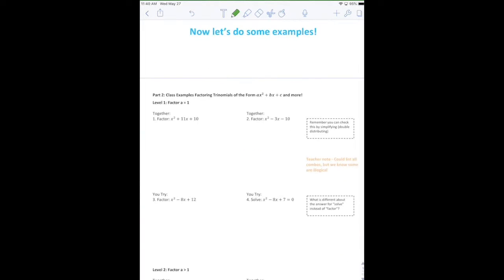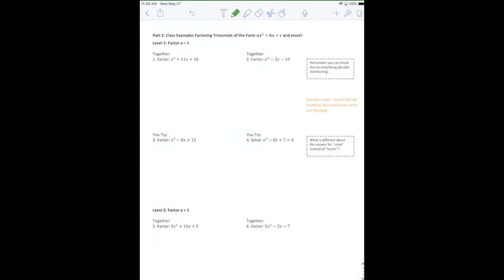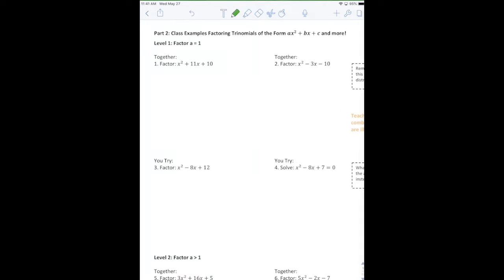So our goal is going to be to start with something like this and figure out how we factor it. If you are in my packet, can you go down to where it says part 2, level 1 factor? So the first problems are the most basic. We say that A equals 1. What I mean by that is that there's a coefficient of 1 in front of x squared in both of these problems.